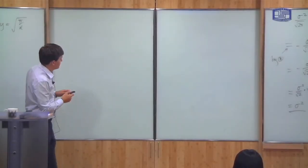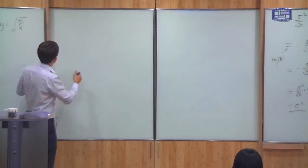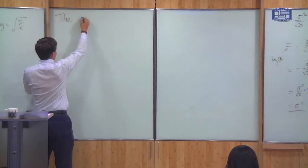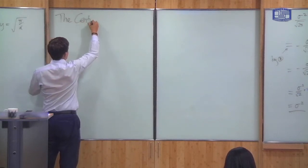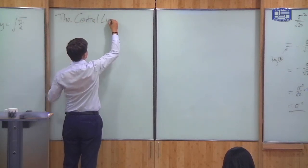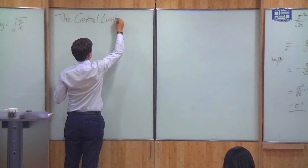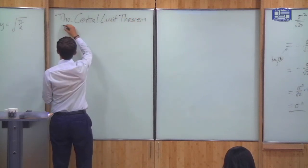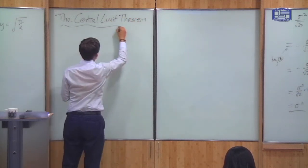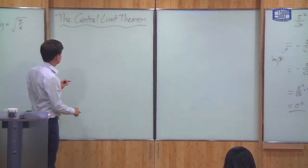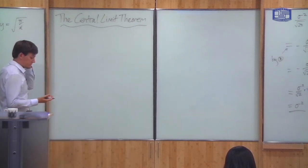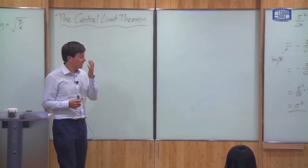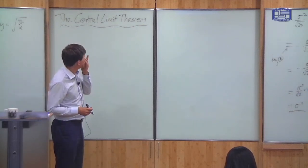The normal distribution is very important because of a result called the central limit theorem. I'll state this, and then for the rest of the class we're going to look at some examples of this.